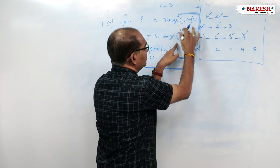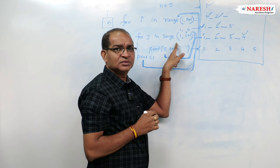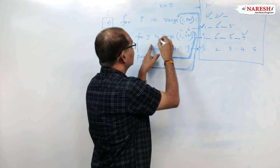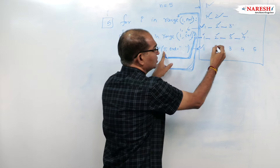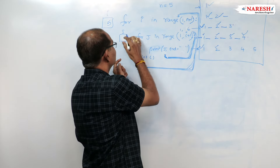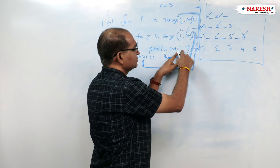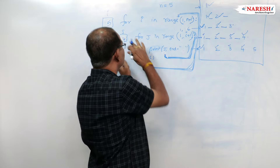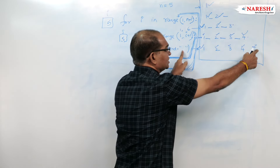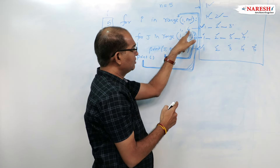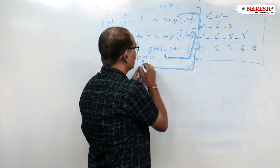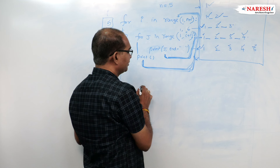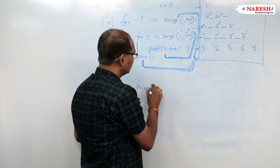Coming to the inner loop, j is in range(1, 6), that is 1 to 6. j takes values 1, 2, 3, 4, 5. Printing each: 1, 2, 3, 4, 5 with spaces. When j becomes 6 it stops. Coming out, cursor moves to the next line, going back to the outer loop. Outer loop becomes false since range was 1 to 6 and i is now 6. Program execution is over.